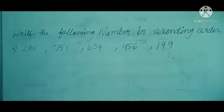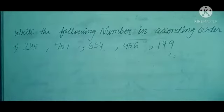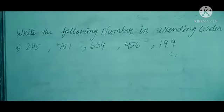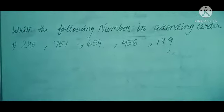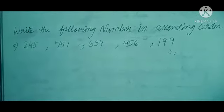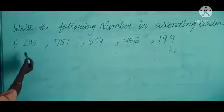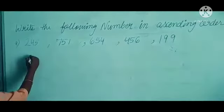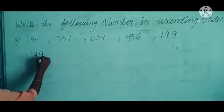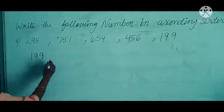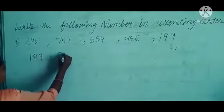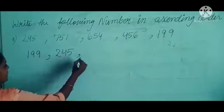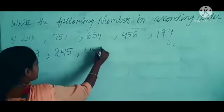Next, we learned in 4th class: write the following numbers in ascending order. In ascending order, we always write from the smallest to the greatest number. The smallest number is 199. After that, the next is 245. After that, 456.